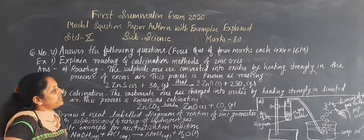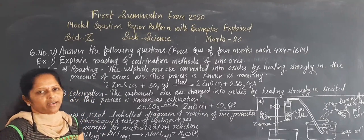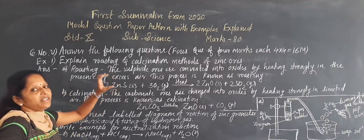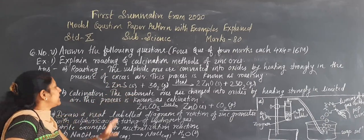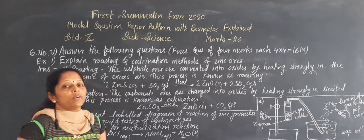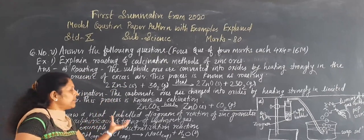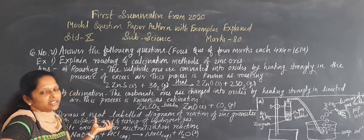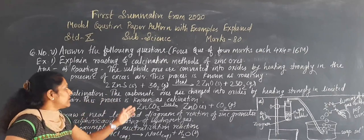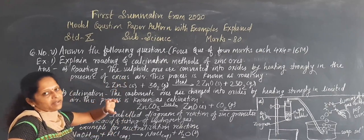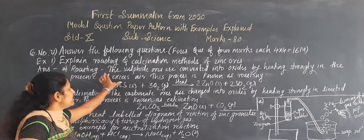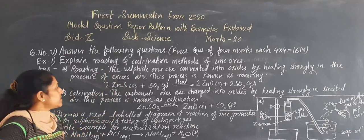Next is the calcination method. The carbonate ores are also converted into the oxide. For the sulfide, heating is done in the presence of excess air; like that for the carbonate also. The carbonate ores of zinc are also present in the middle-activity series. We want to separate the sulfide and the carbonate ores, and so roasting and calcination methods are used here.